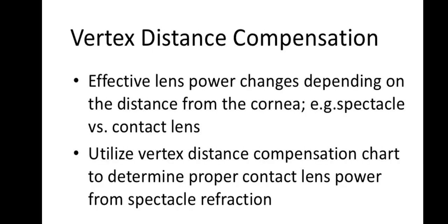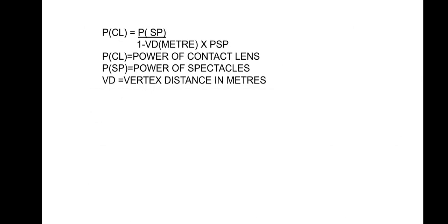Vertex distance compensation is needed because effective lens power changes depending on distance from the cornea. A vertex distance compensation chart or formula is used to convert spectacle refraction to the proper contact lens power. The vertex distance must be entered in meters in the formula.